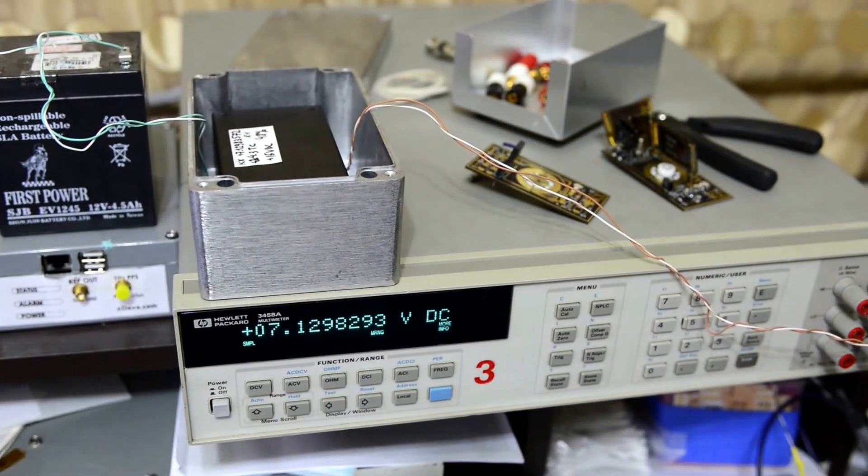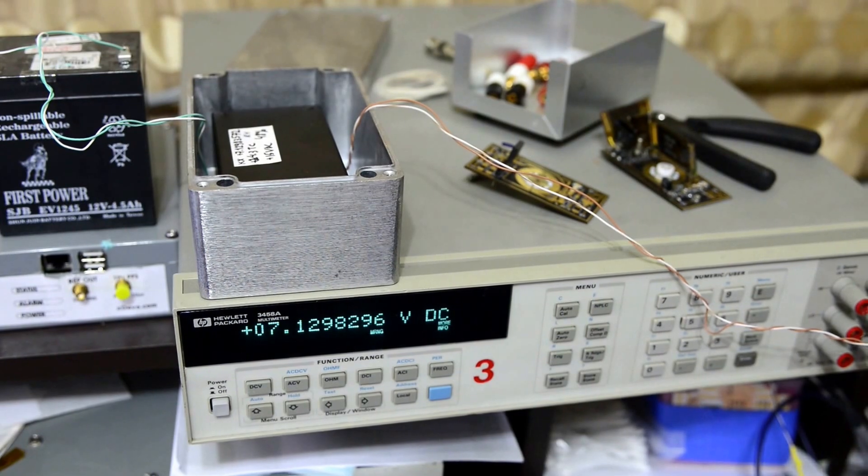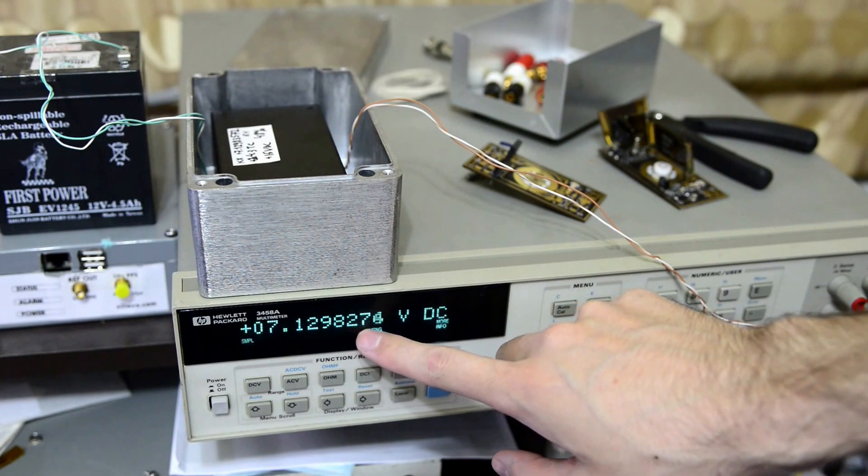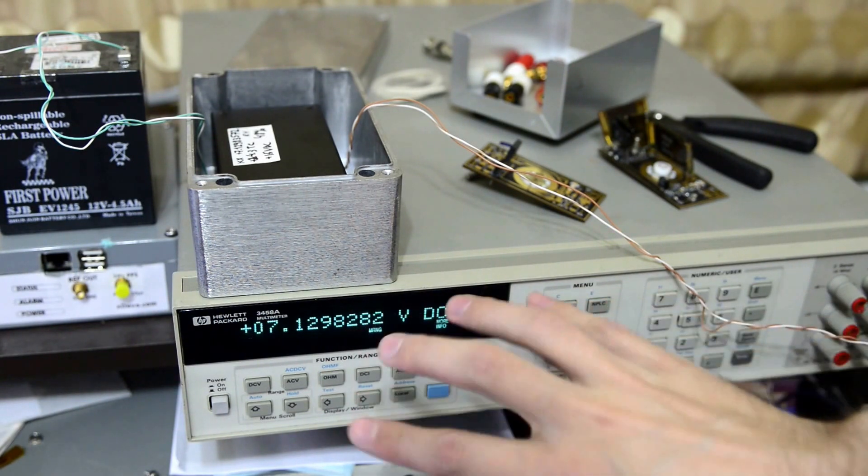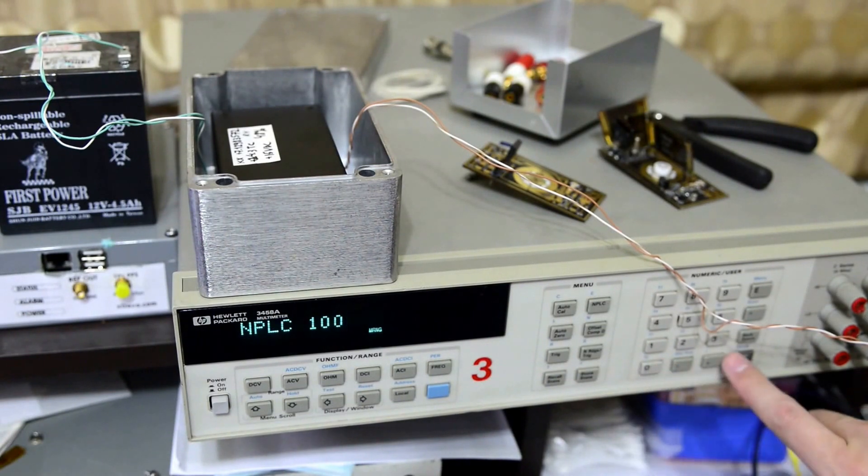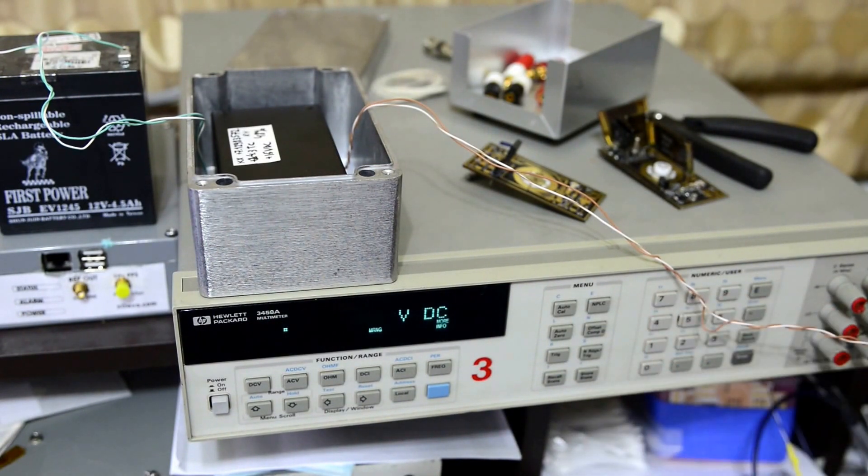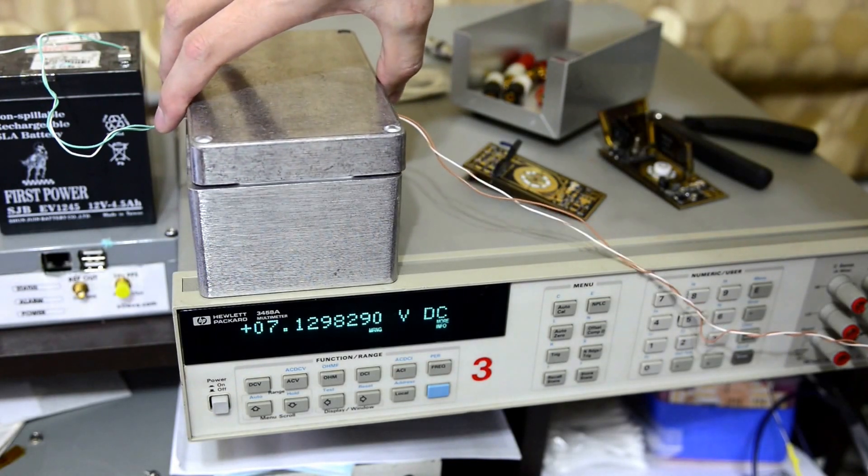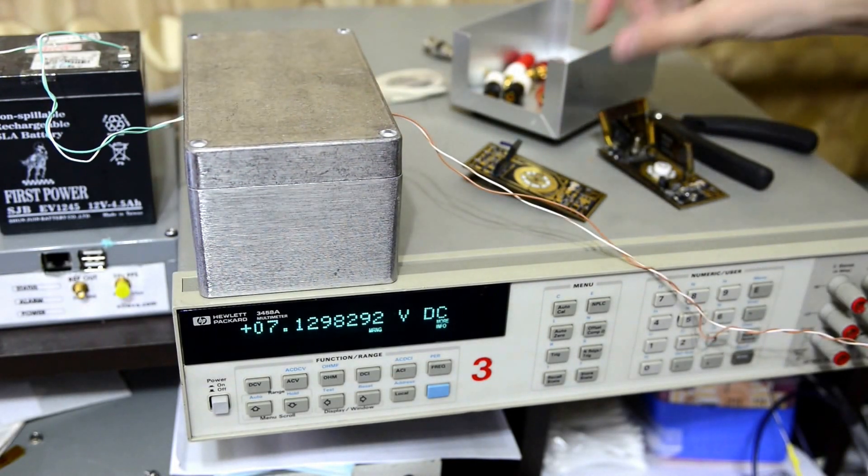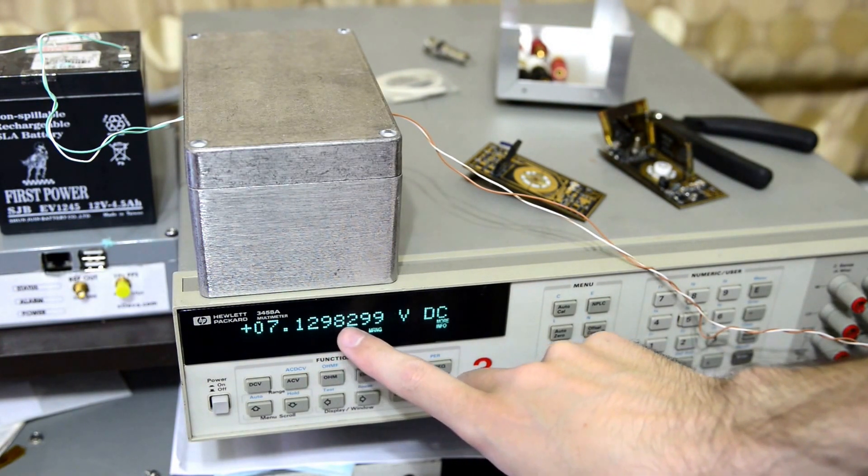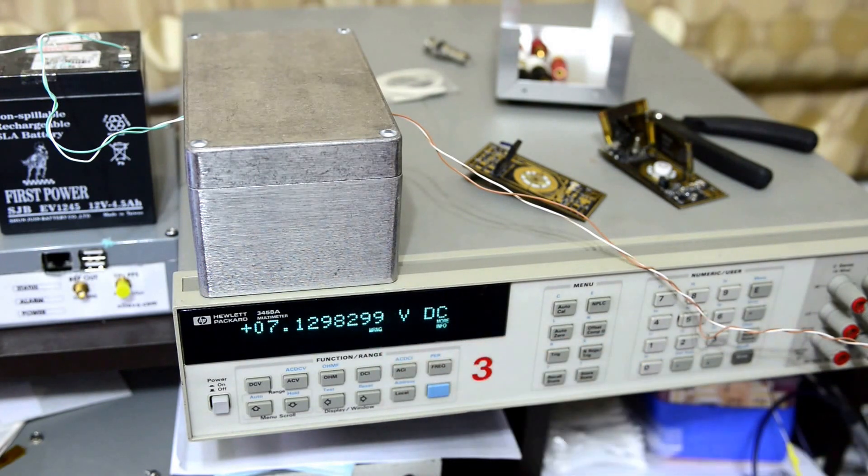So here we can see it is jumping around 827 microvolts, around there. If I make it slower, just reading is about the same. I'll put this back in. And so we can remember this value, 82, 90, 90 something.